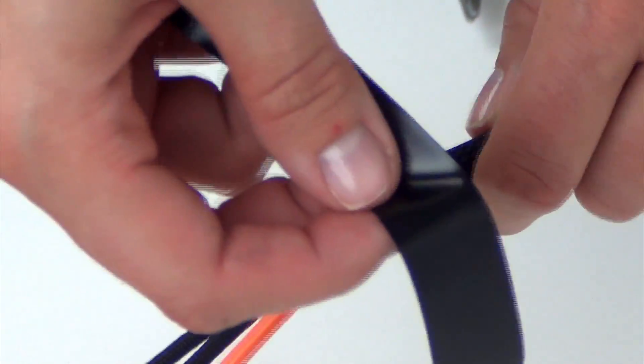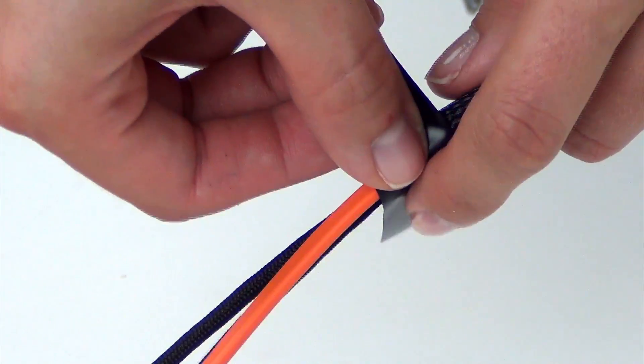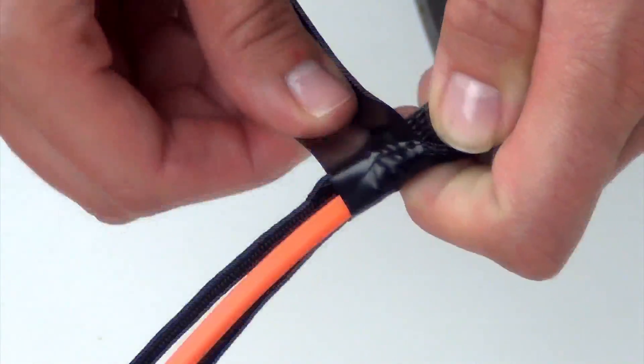Now, you'll tape the end of the outer braid to the DR PCB cable and two pull cords. Be sure to cover the end of the outer braid and cut the tape from the roll.